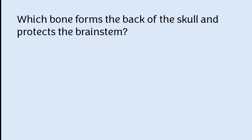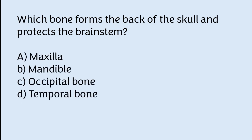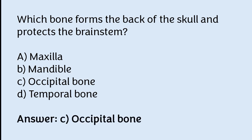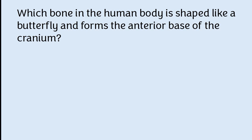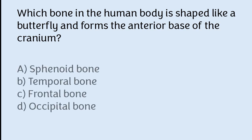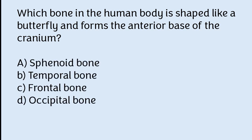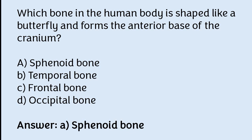Which bone forms the back of the skull and protects the brain stem? Maxilla, mandible, occipital bone, or temporal bone. The correct answer is option C — the occipital bone forms the back of the skull and protects the brain stem. Which bone in the human body is shaped like a butterfly and forms the anterior base of the cranium? Sphenoid bone, temporal bone, frontal bone, or occipital bone. The correct answer is option A — the sphenoid bone is shaped like a butterfly and forms the anterior base of the cranium.